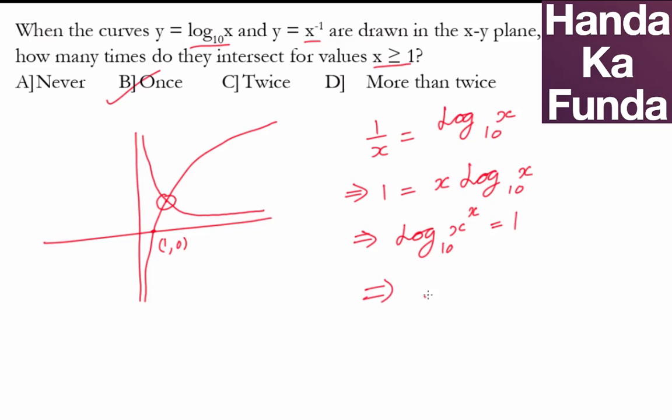Which essentially means x to the power x should be equal to 10. Now how many values can be there greater than 1 where x to the power of x will be equal to 10? We know that 2 square is 4 and 3 cube is 27, so the value of x will be somewhere between 2 and 3.